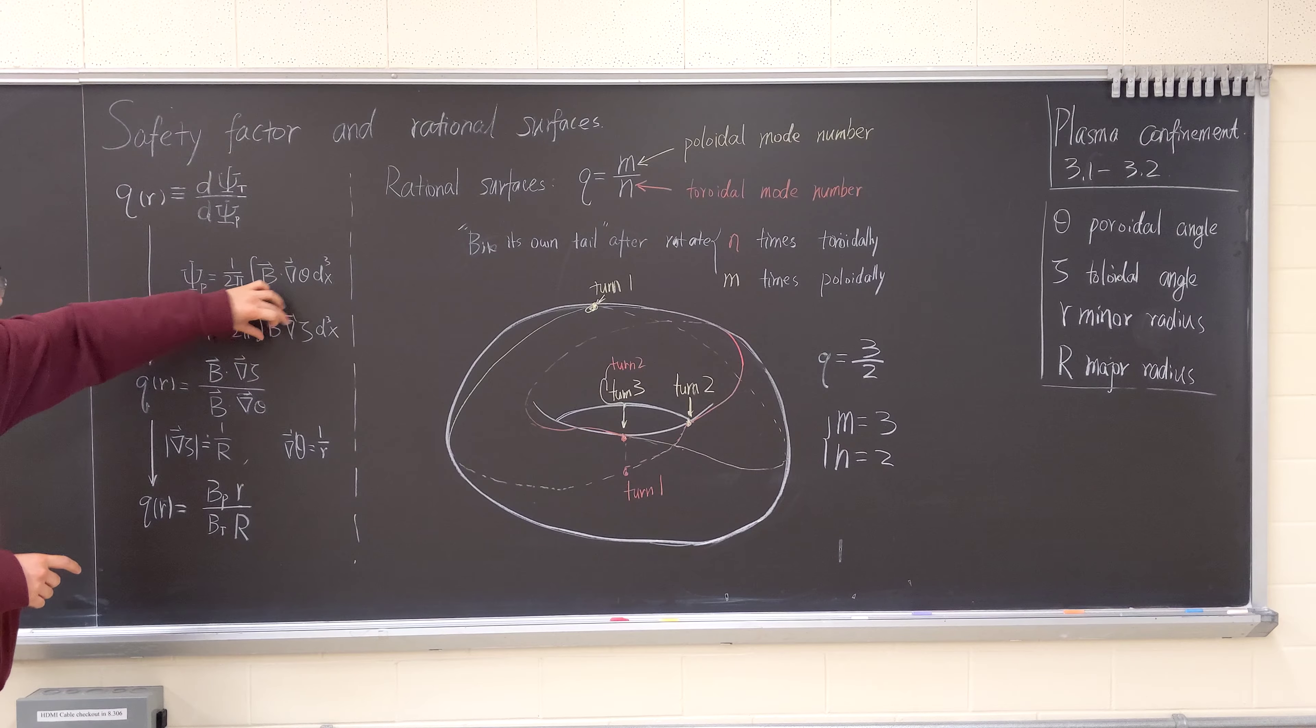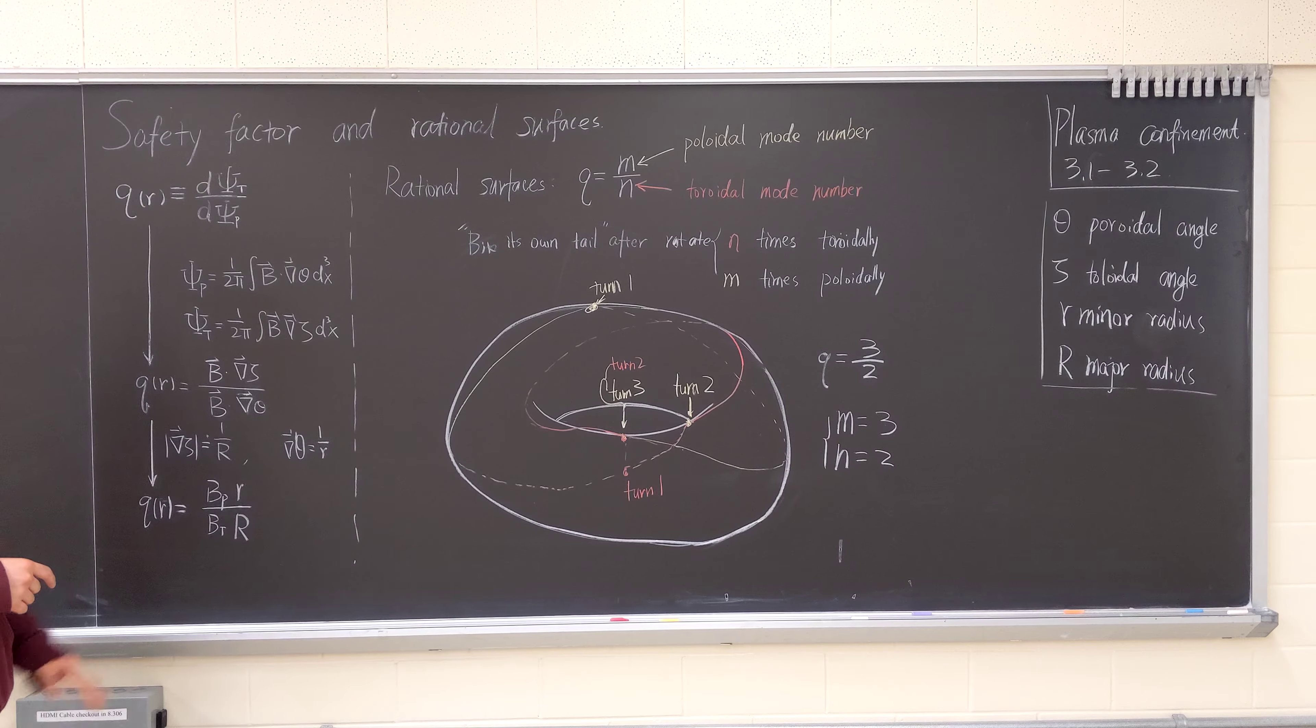This here, this here, and 1 over 2 pi cancels out. And the curvatures of a toroidal and poloidal is about that.